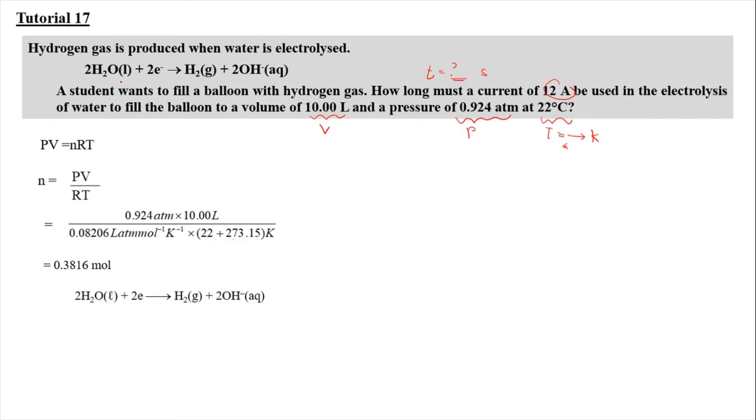We need to look back into the equation here where 2 mol of electron produces 1 mol of hydrogen gas. We can change the 2 electrons into Coulomb, which is 2 times 96500 Coulomb. However, the one that really takes part during the reaction is only 0.3816 mol of hydrogen. So we can find the X value first by cross multiplication. So 0.3816 times 2 times 96,500 Coulomb. We will get 73667.5 Coulomb. And then this refers to Q.